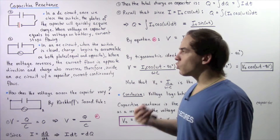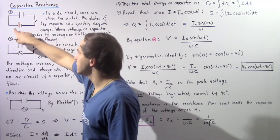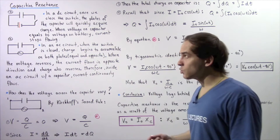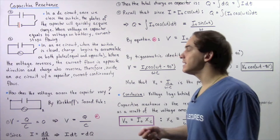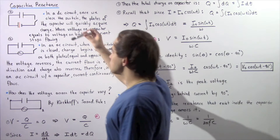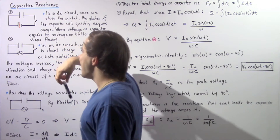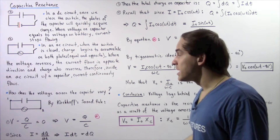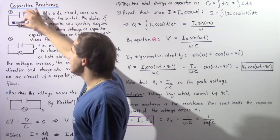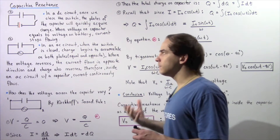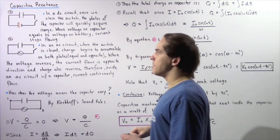Let's begin by recalling what takes place when we take a capacitor and place it into a circuit that contains a battery. A battery is essentially a source of direct current — a current that remains constant and does not change over time. So once we place the capacitor into our circuit that contains a battery and we close the switch, an electric current begins to flow.